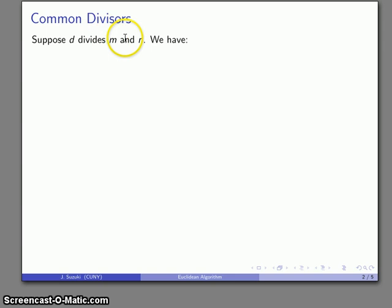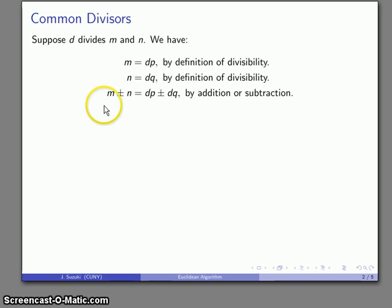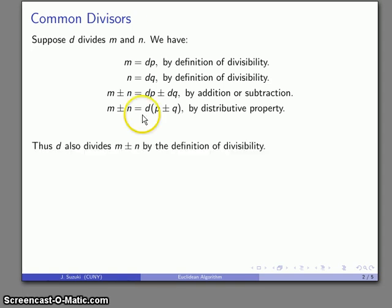Suppose I have d dividing two numbers, m and n, so d is a common divisor of the two numbers. By my definition of divisibility, m is d times something, and n also is d times something. That means that if I add or subtract m and n together, I get the addition or subtraction of two things that are d times something. My distributive property allows me to factor the d out, and so my definition of divisibility once again says that d is a divisor of m plus or minus n. And this is the basis for the Euclidean algorithm.